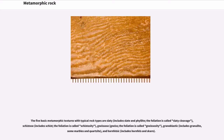The five basic metamorphic textures with typical rock types are: slaty, which includes slate and phyllite, and the foliation is called slaty cleavage; schistose, which includes schist, and the foliation is called schistosity; gneissic, which includes gneiss, and the foliation is called gneissosity; granoblastic, which includes granulite, some marbles and quartzite; and hornfelsic, which includes hornfels and skarn.